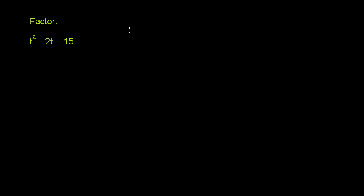So we're looking for two numbers — let's call them a and b. The product of these two numbers needs to be the product of the coefficient on the t squared, which is 1, and the negative 15 right here. So a times b has to be equal to 1 times negative 15, or just negative 15. And the sum a plus b needs to be equal to negative 2.